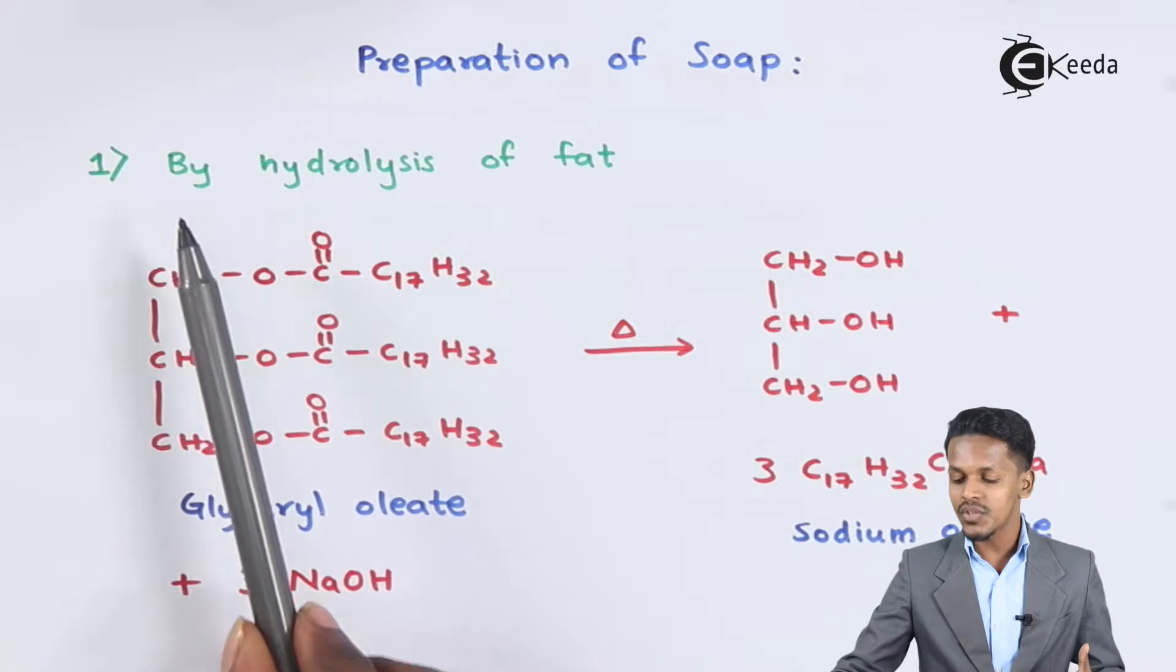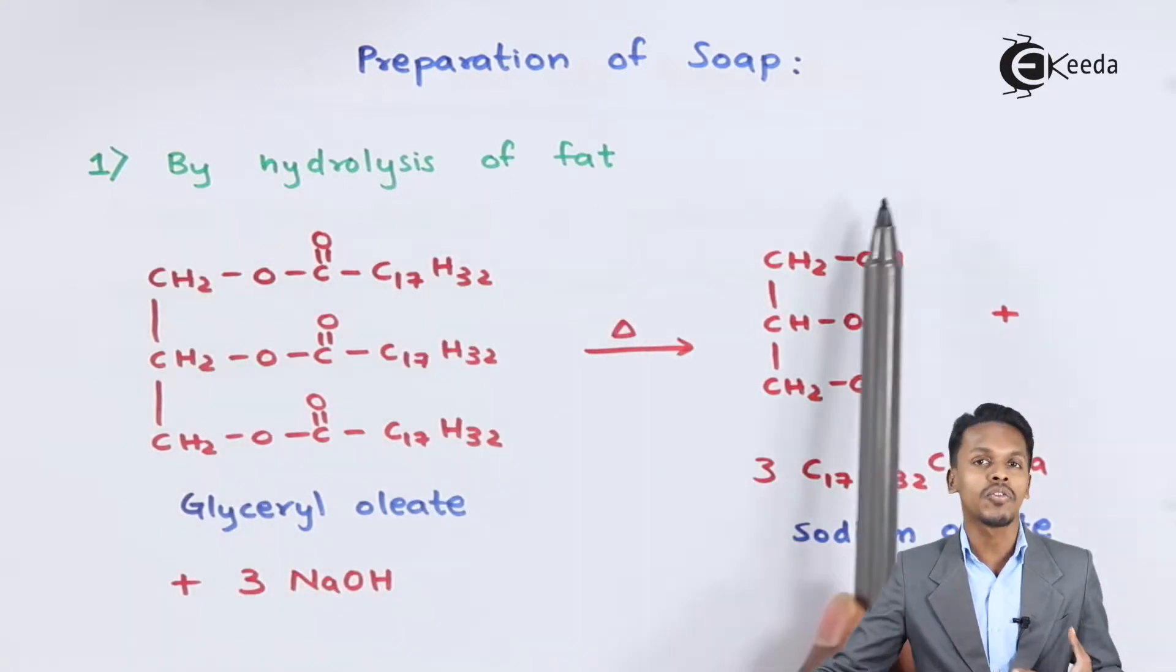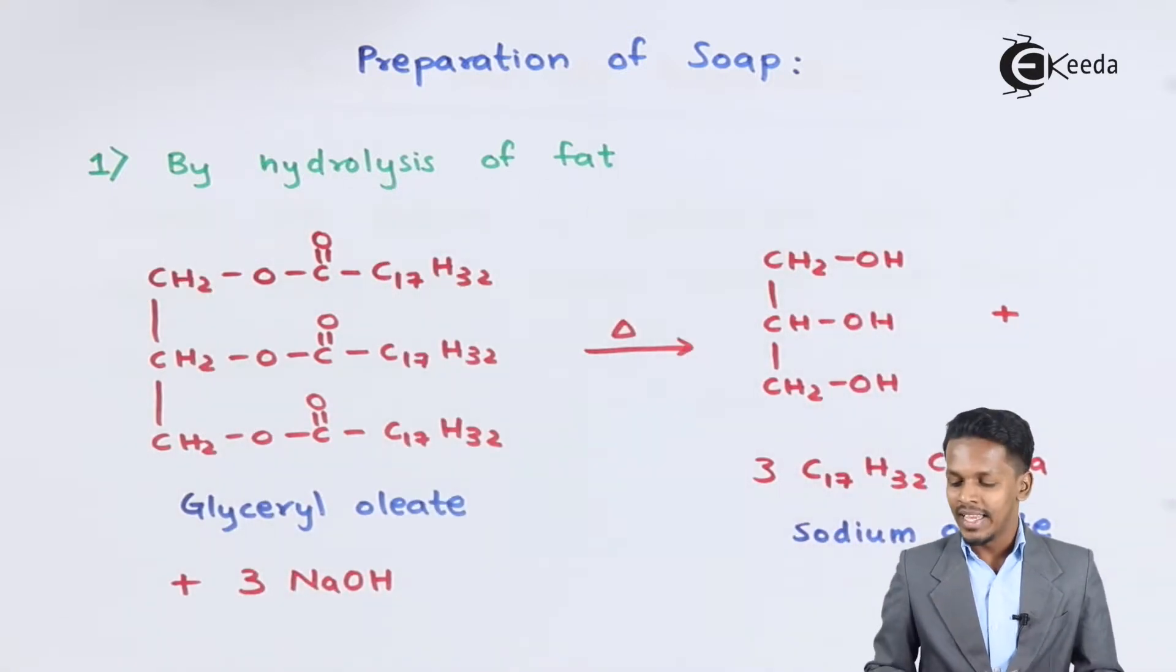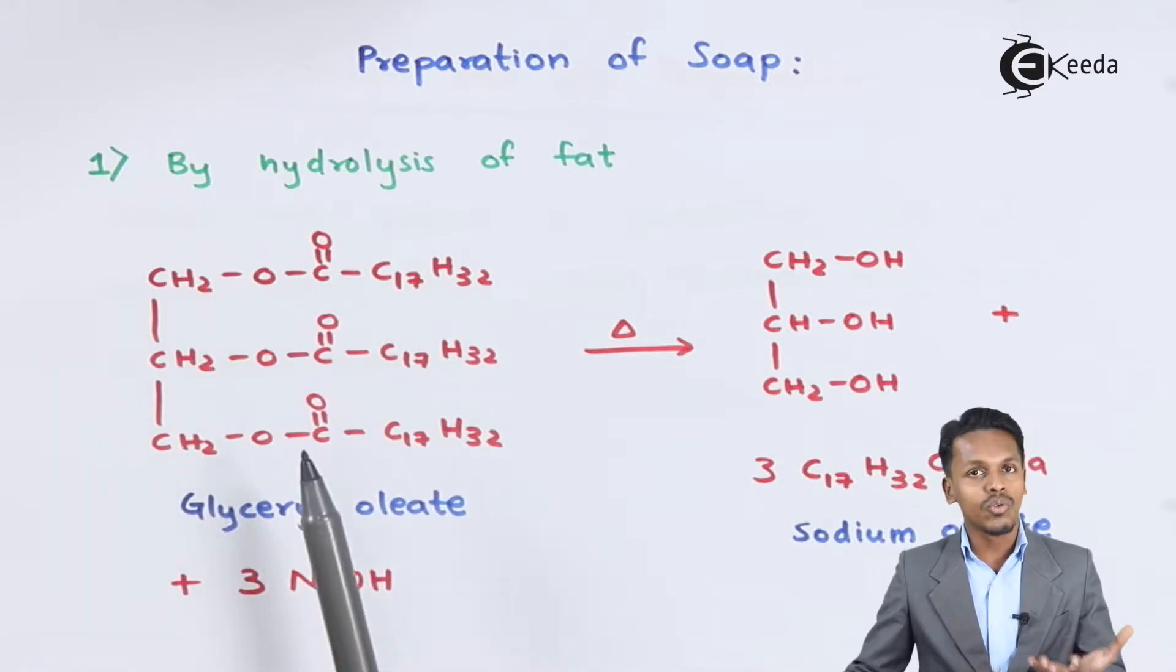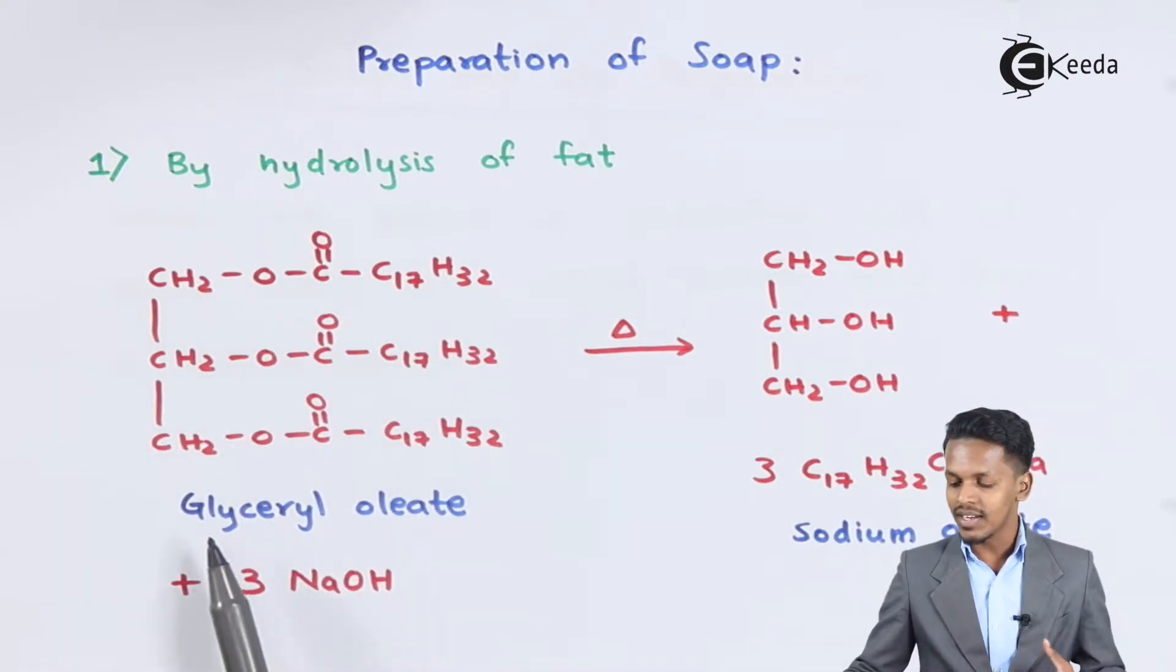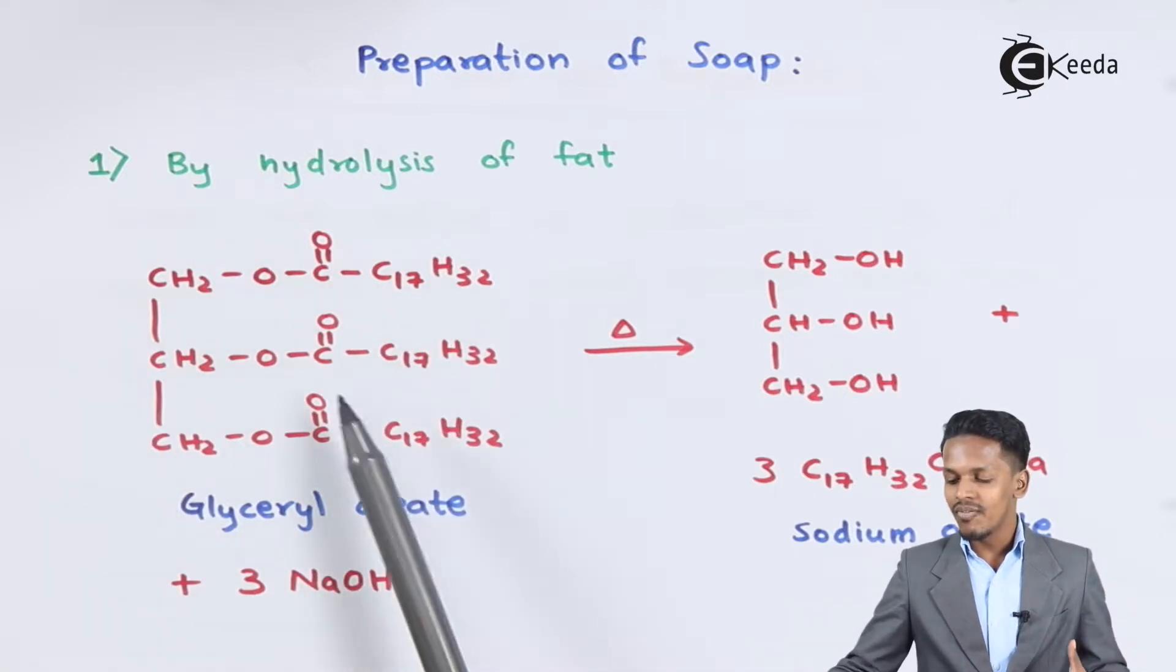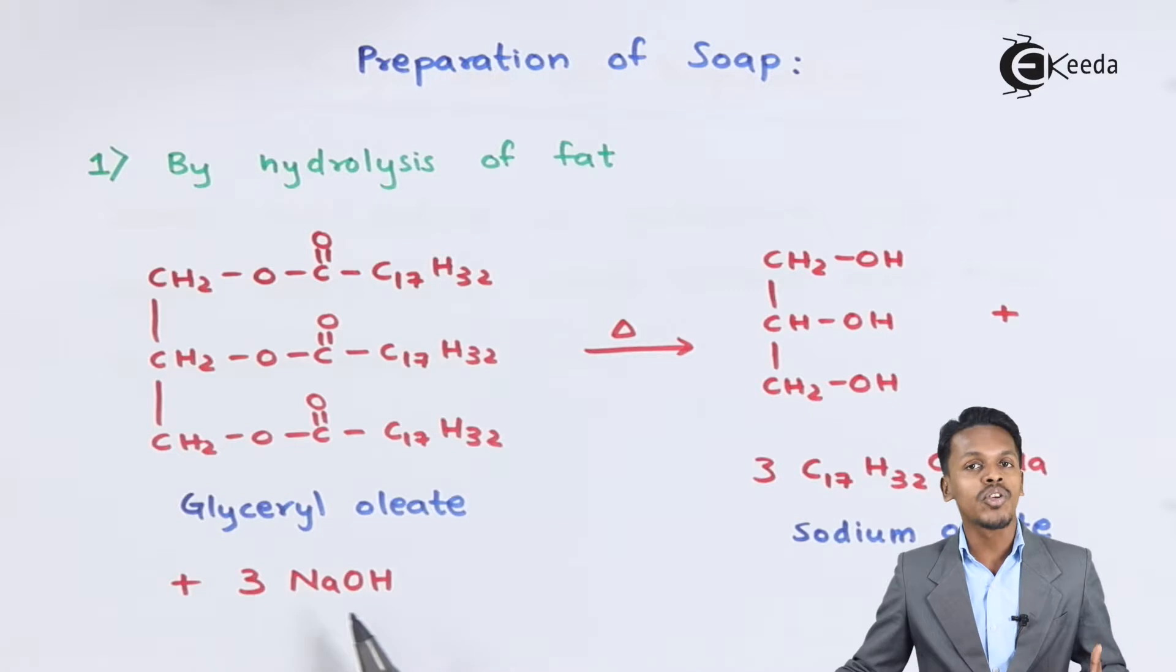The first method is by hydrolysis of fat, which is also known as saponification. In this case, we consider a fat—this could be oil or fat—specifically glyceryl oleate. We react it with three moles of NaOH, and on hydrolysis with NaOH, on heating it, we get the products.